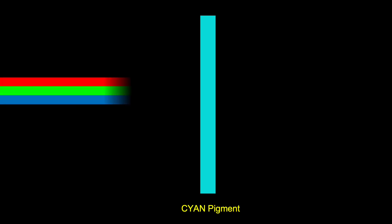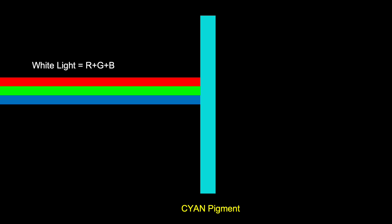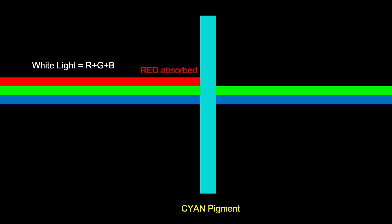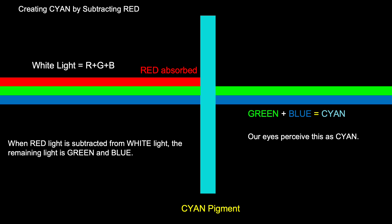Now let's see how cyan is formed. White light again contains R, G and B. When it passes through cyan pigment, the red light is absorbed. What remains is green and blue, which combine to form cyan. Cyan pigment looks cyan because it subtracts red from white light and reflects the rest.